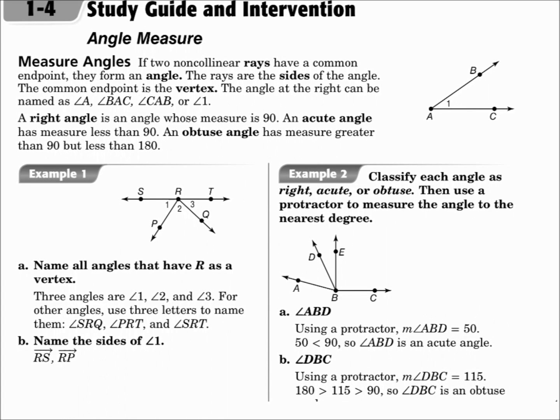This is lesson 1.4, Angle Measure. The objectives are to measure and classify angles, and identify and use congruent angles in the bisector of an angle.